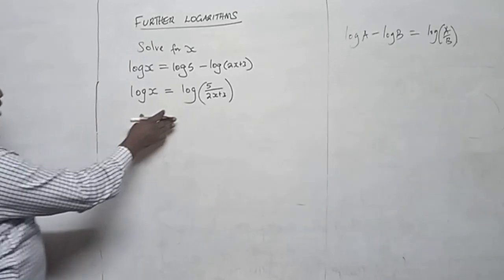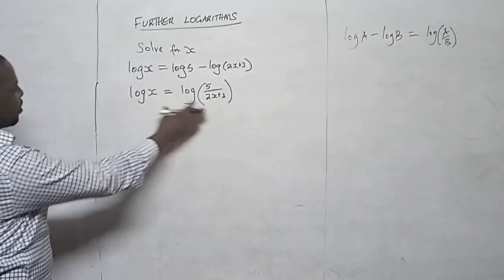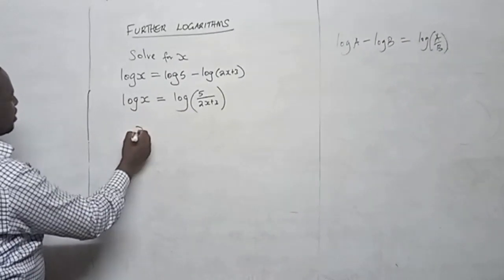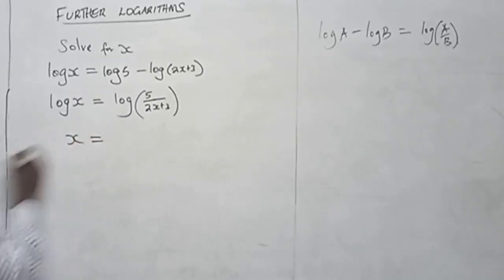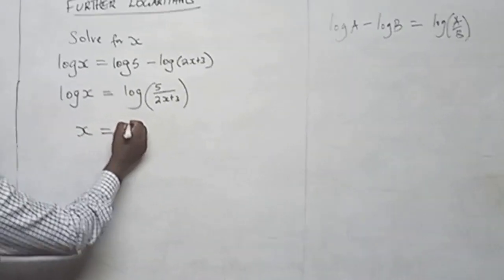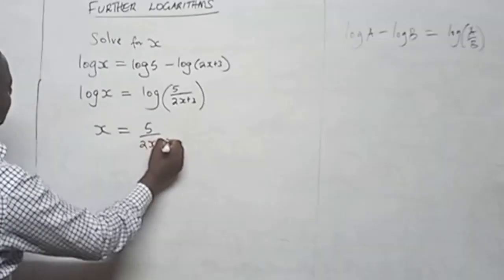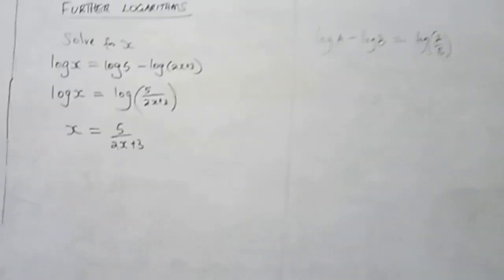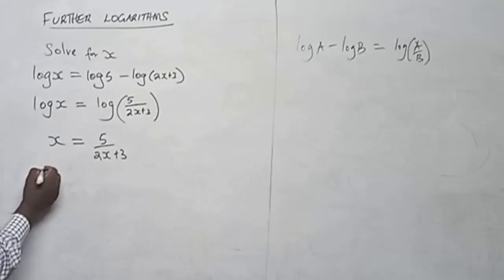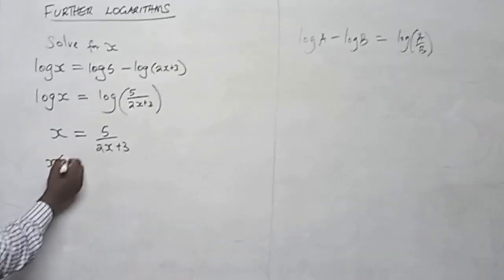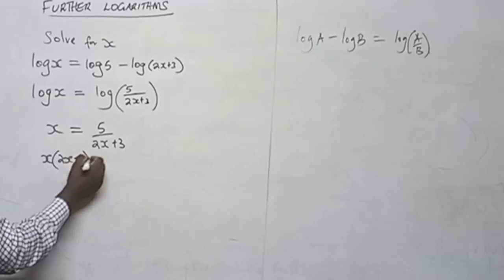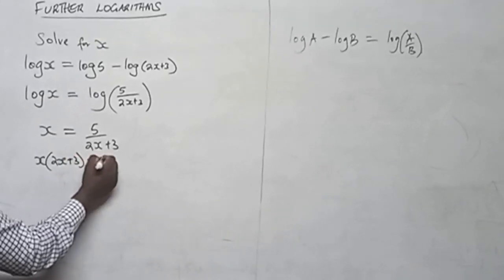So from here we are going to drop the logs on both sides. Therefore we are going to have x equal to 5 over 2x plus 3. When we cross multiply this becomes x into 2x plus 3 is equal to 5.